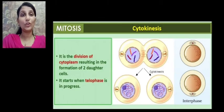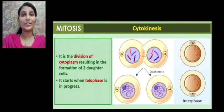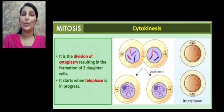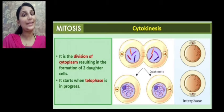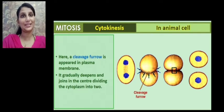But we have not obtained two daughter cells. The objective of mitosis is to acquire two daughter cells. So two daughter cells are obtained only after the second process, that is cytokinesis, which is nothing but the division of the cytoplasm resulting in two daughter cells. And it starts when telophase is in progress.